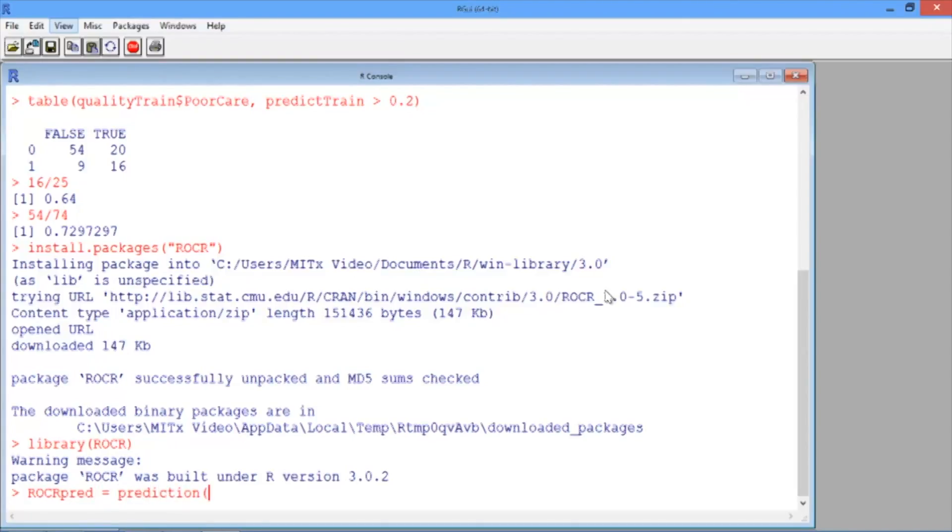This function takes two arguments. The first is the predictions we made with our model, which we called predict train. The second argument is the true outcomes of our data points, which in our case is qualityTrain$PoorCare.